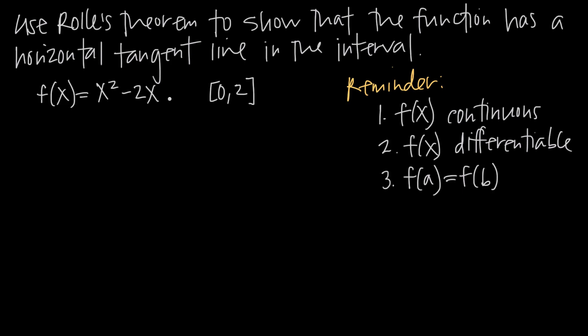So how do we do that using Rolle's theorem? Well, Rolle's theorem is built on three assumptions. If we don't meet any one of those three assumptions, then we can't use Rolle's theorem to prove the existence of a horizontal tangent line. So all three of these things have to be met.